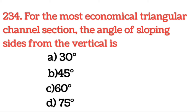Next question: For the most economical triangular channel section, the angle of the sloping side from the vertical is? Answer: 45 degrees. Most economical triangular channel section के लिए angle of sloping side vertical से 45 degrees होना चाहिए।